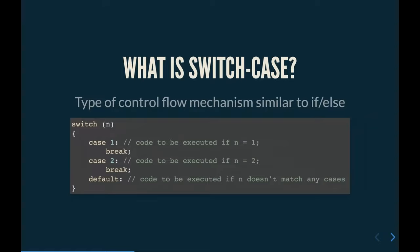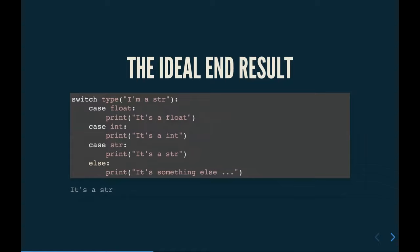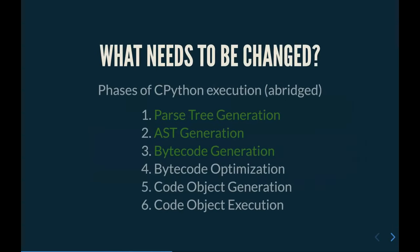For those who don't know, switch-case is a type of control flow mechanism very similar to if-else. The ideal result I was looking for in Python is something where you have a switch and a case, and an "elstick" statement that looks very Pythonic. I'm not going to cover all the internals of CPython — just the things I explicitly modified. In green are the parts I modified to support switch-case, specifically AST generation and bytecode generation. It turns out to be about 200 lines — not that much to implement a language feature.